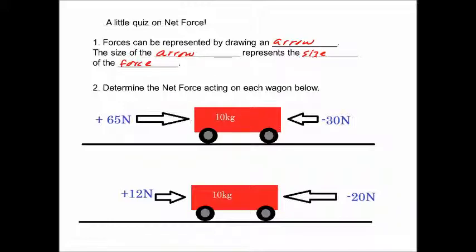Question two, determine the net force on each wagon below. The first one we have positive 65 newtons plus negative 30 newtons. So we can set that up: positive 65 newtons plus negative 30 newtons, and that's going to give us a net force of positive 35 newtons. In other words, 35 newtons acting to the right.